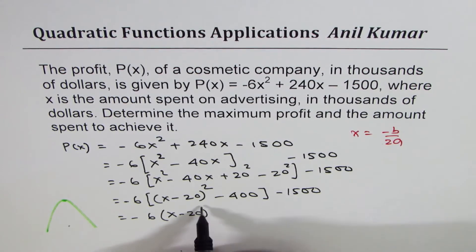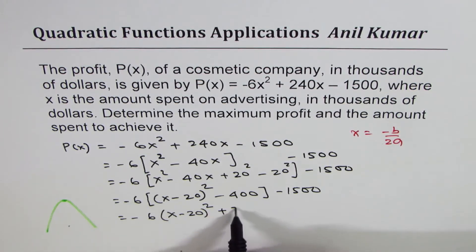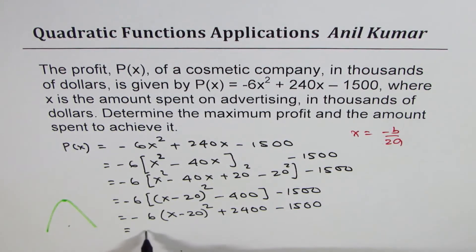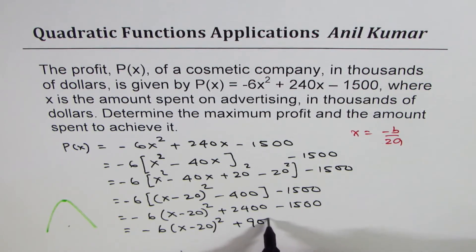(x - 20)². 6 times 4 positive sign. 6 times 4 is 2400 minus 1500. Now that gives you -6(x - 20)². So that is 2400 take away 1500 gives you 900. Perfect.